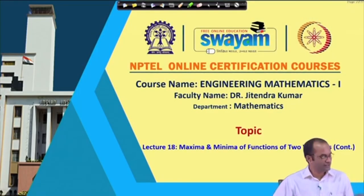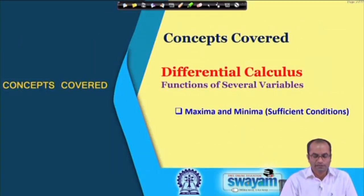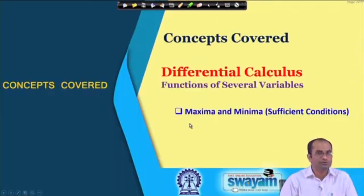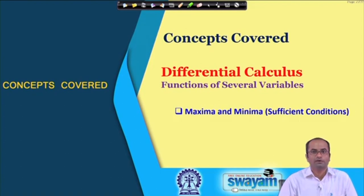Welcome back to the lectures on engineering mathematics 1. This is lecture number 18. We will be talking about the maxima and minima of functions of two variables. In particular, today we will be talking about the sufficient conditions, which will be used for characterizing the critical points — whether it is a point of local maximum, local minimum, or a saddle point.